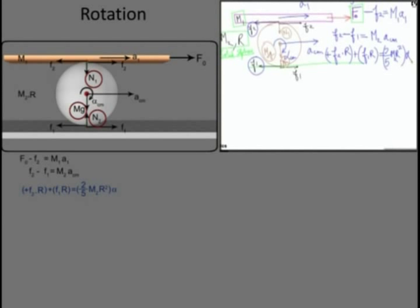So I have got three equations. How many unknowns? Five: A1, ACM, alpha, F1, and F2. I need two more equations. N1 and N2 are also unknowns but we don't need vertical equations for this problem — they give two more equations and two more unknowns but are unrelated to F1 and F2. The two extra equations come from the contact points.